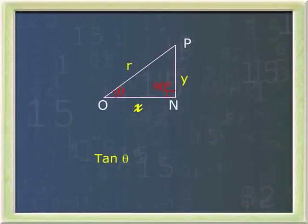Tangent of angle theta can be derived as the ratio of side opposite to theta by side adjacent to theta, that is Y by X.